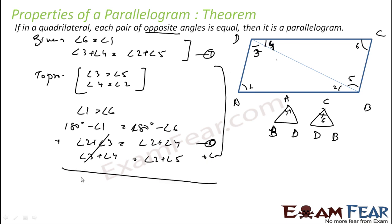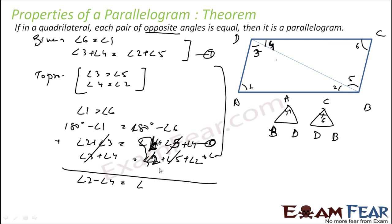So if we subtract the equations, angle 2 plus angle 3 equals angle 2 plus angle 4. The angle 2 terms cancel, giving us angle 3 equals angle 4. Solving further, 2 times angle 2 equals 2 times angle 4, so angle 2 is equal to angle 4.